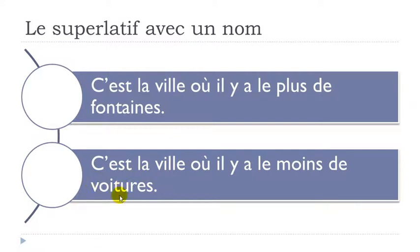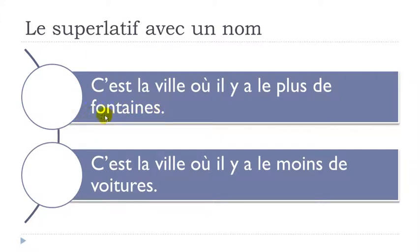Let's look at these two sentences. The first thing to spot is that here it's 'le plus' and here it's 'le moins' — you don't care whether it's masculine, feminine, or plural. You just put 'le plus' for 'the most' and 'le moins' for 'the least'. Then remember you will have to put your preposition 'de' right after. Have a look — your noun 'fontaine' or 'voitures' should be without any article before it.